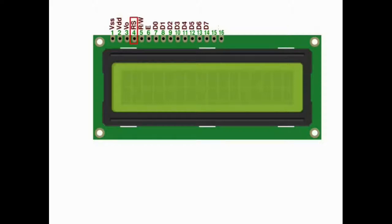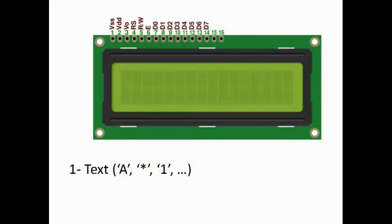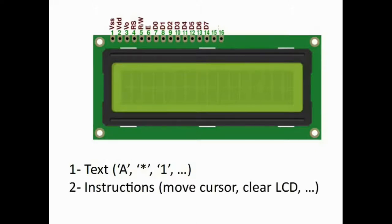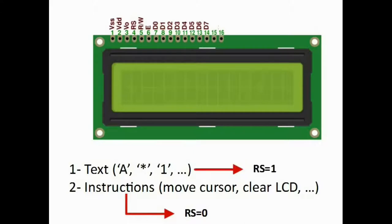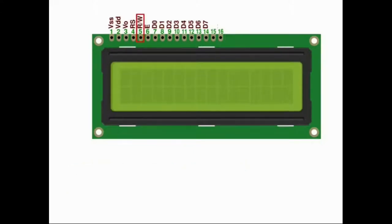Now let's go back to the remaining pins. First is the RS (register select) pin. The LCD data pins can accept one of two types of input: text data — like the character A we sent earlier — which is displayed on the LCD, or instructions that tell the LCD things like where to place a character, whether to show the cursor, or to clear the screen. The LCD interprets the data line as instructions or data depending on the RS pin: zero means instruction, one means data.